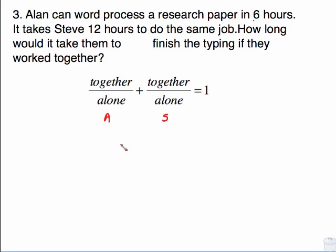So Alan can word process a research paper in 6 hours. His alone time, which is his denominator, is 6. It takes Steve 12 hours to do the same job alone. So there's the denominator for Steve's fraction. How long would it take them to finish the typing if they work together? They're working the exact same amount of time together, and we're going to call that x.